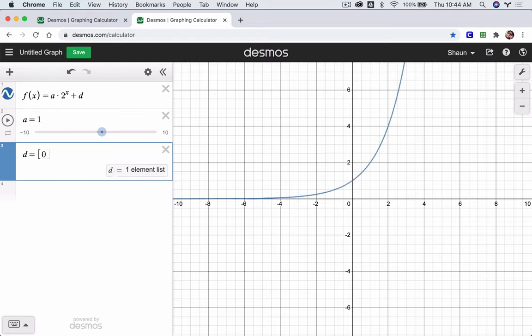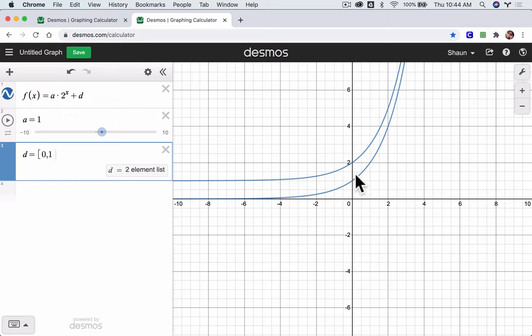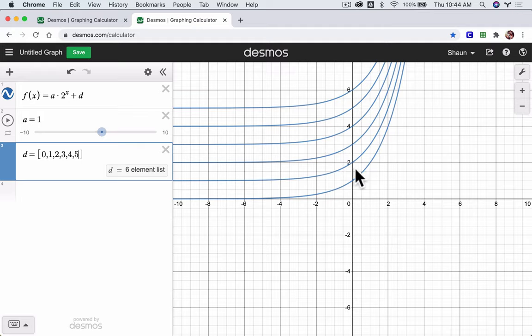So if I type 0, now I've got something on the list. But if I type comma 1, I get two values for d, and they're both graphed right there. Now I can type in 2, 3, 4, and 5 to get a whole series of these functions here.